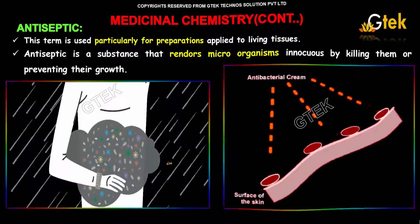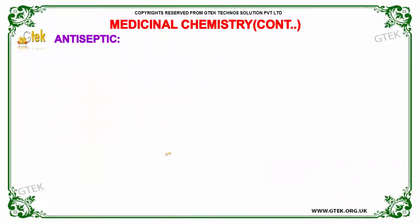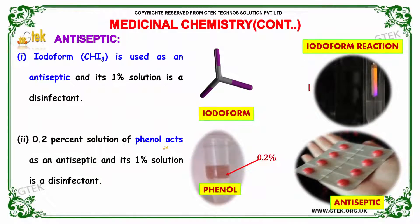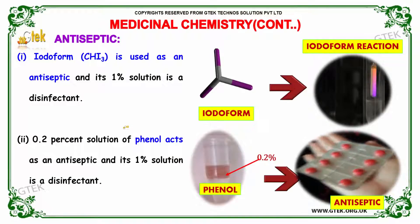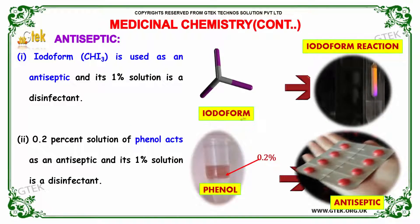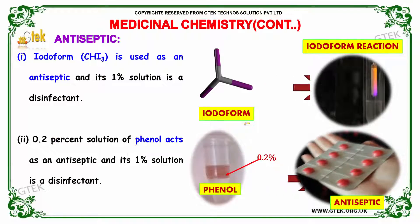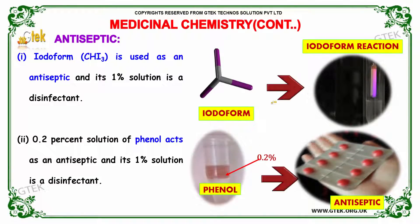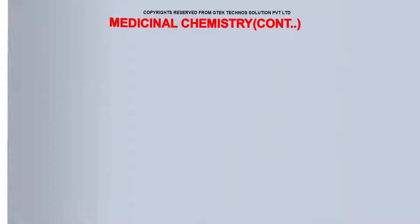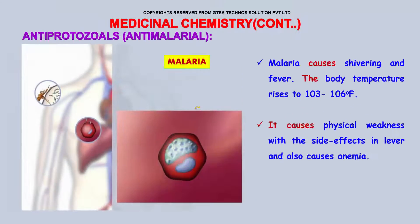Iodoform is a type of antiseptic, and its one percent solution is used as a disinfectant. A disinfectant is used to remove infection on hands or any part of the body. A 0.2 percent solution of phenol acts as an antiseptic, and its one percent solution is known as a disinfectant.